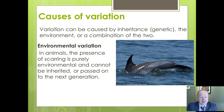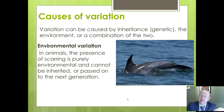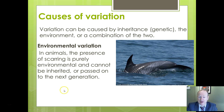In animals, scarring is an example of purely environmental variation — such as propeller scarring on the back of a whale or dolphin where the boat's propeller has repeatedly struck the skin. This is environmental variation; it cannot be passed on to the next generation.